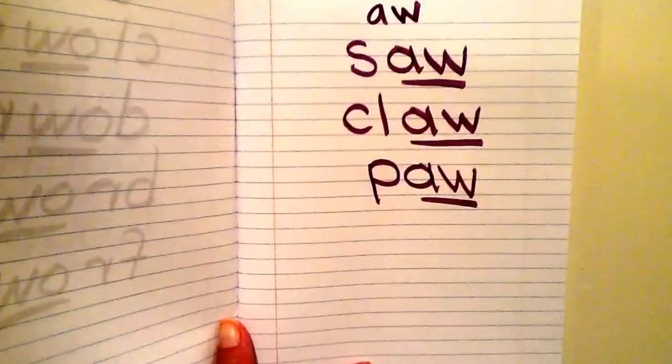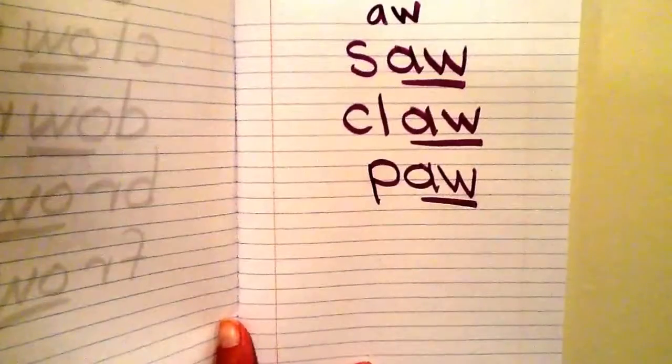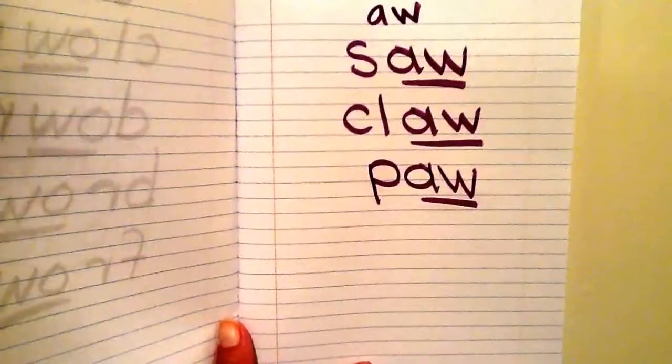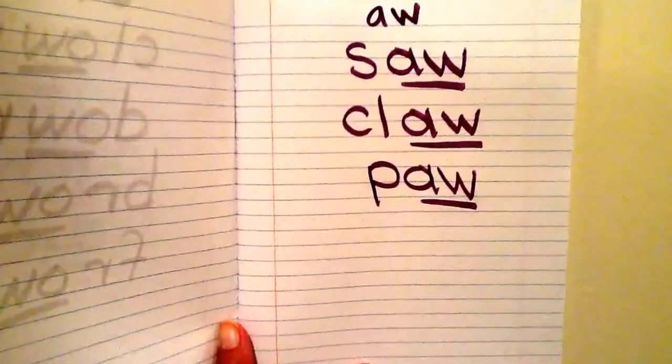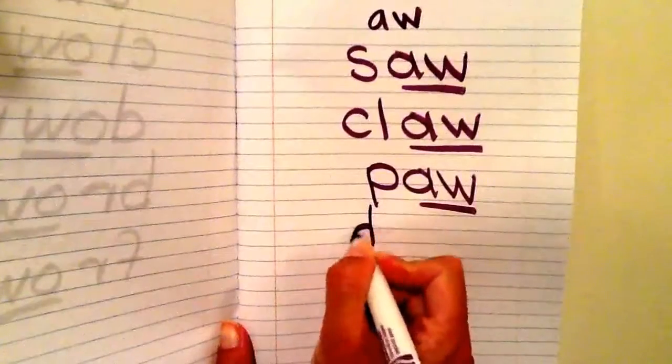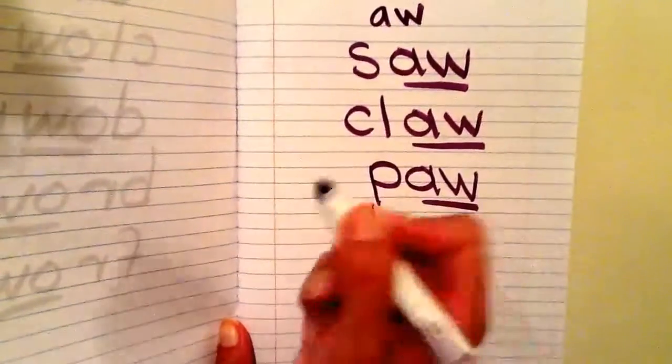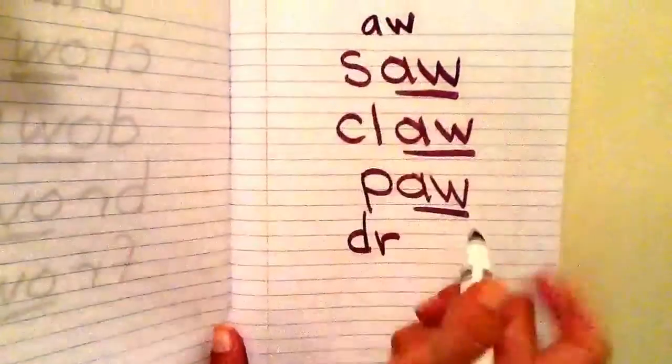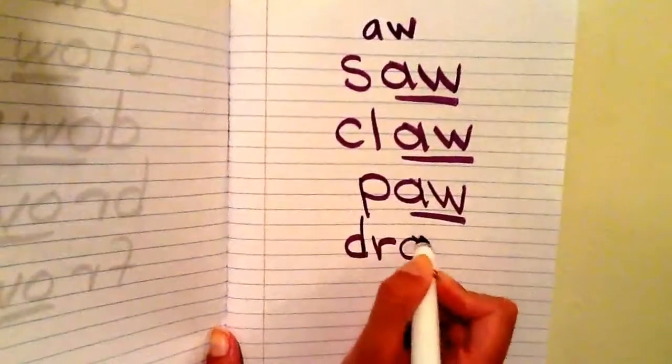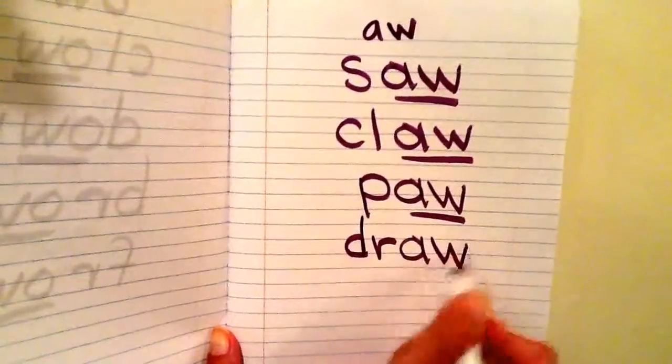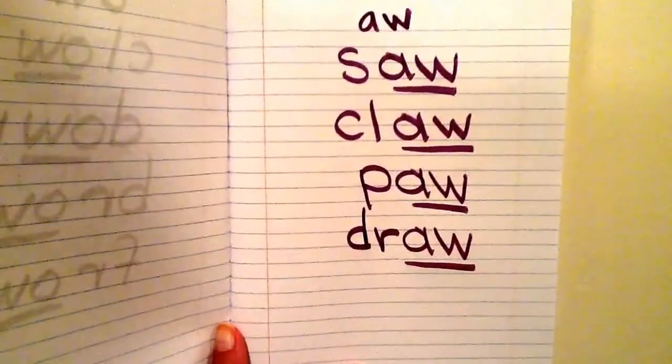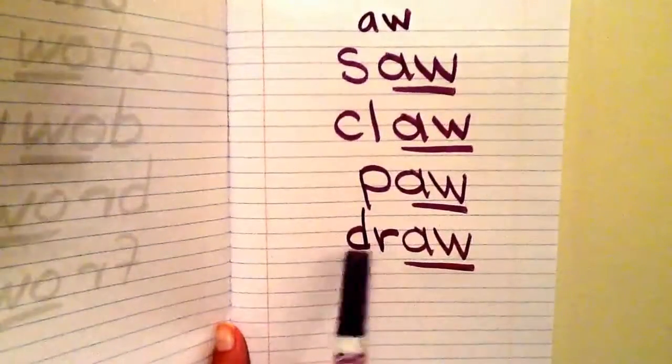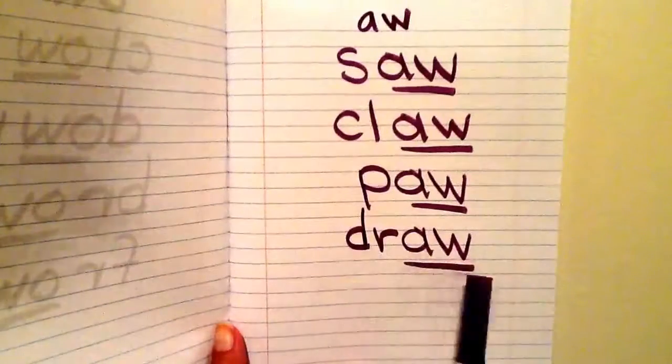The last word that we're going to write that has A-W as AW is the word draw. So I hear a consonant blend at the beginning: D-R. And then I hear AW. And one of the ways to make AW is A-W. Draw. And then I'm going to underline A-W. So please write draw in your word study notebook: D-R-A-W, draw.